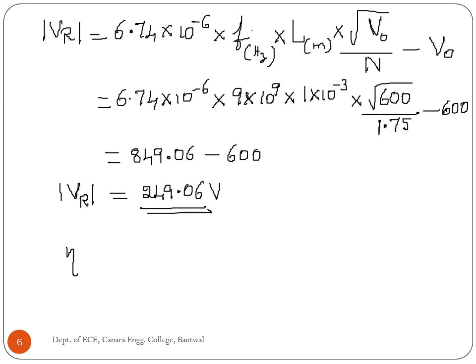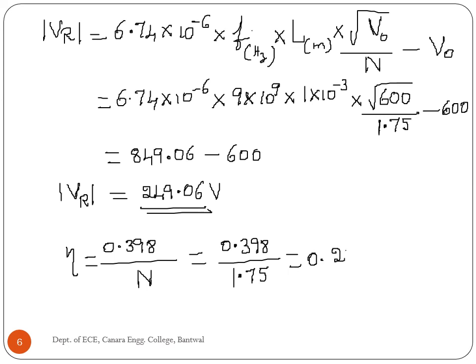Now we need to find efficiency. Efficiency equals 0.398 divided by N, which is 0.398 divided by 1 and 3/4, which equals 1.75, giving 0.2274. Efficiency in percentage is equal to 22.74 percent. This is the solution for the third problem.